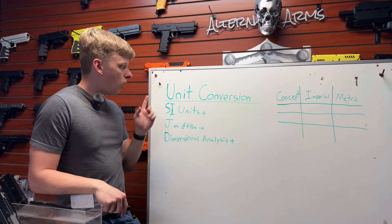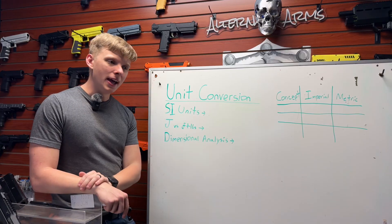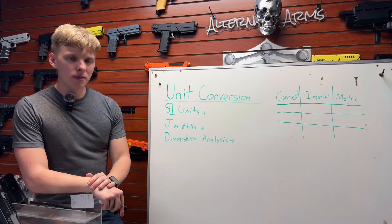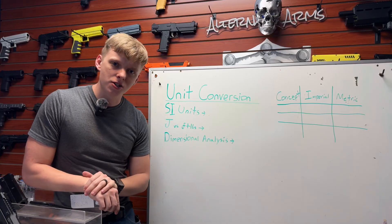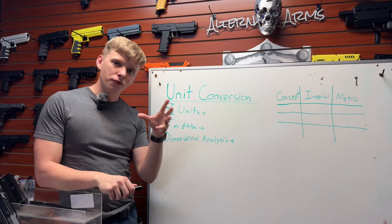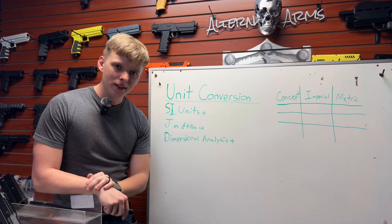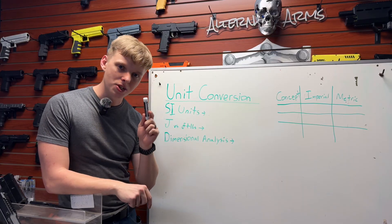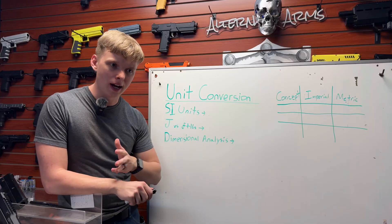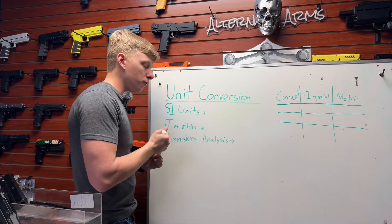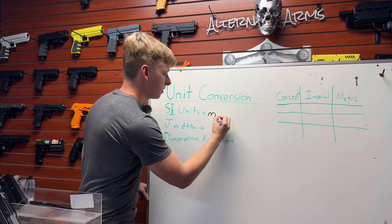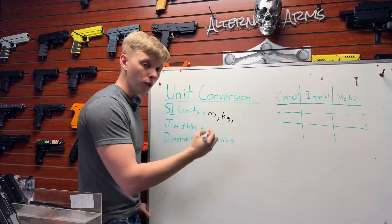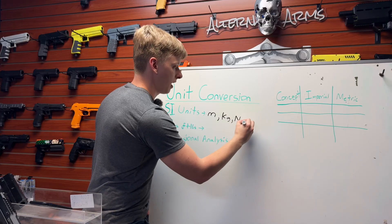What is a unit? A unit is a universally agreed-upon measurement. We have certain usage cases, such as distance. In the metric system, the fundamental unit of distance is meters. SI units are the standard units we use in science to describe certain qualities. For distance, the SI unit is meters. For mass, we have kilograms. For force, we have newtons. And for time, we have seconds.